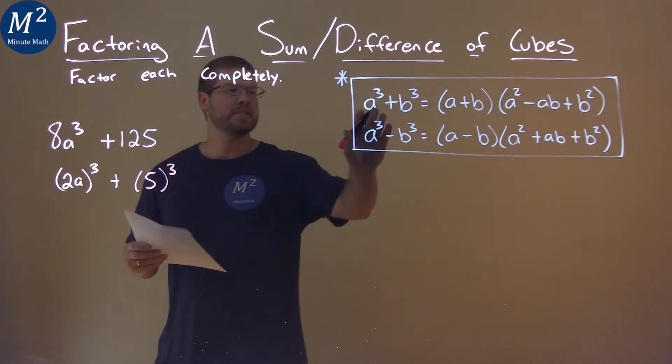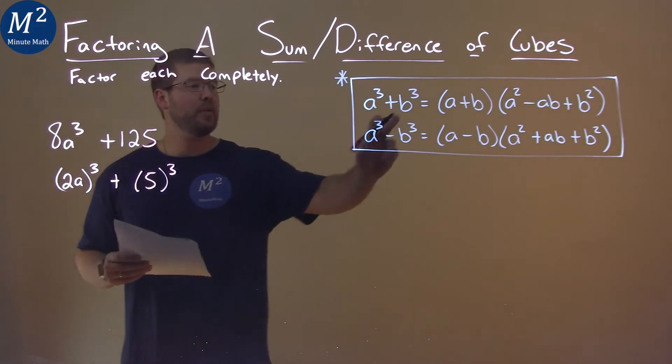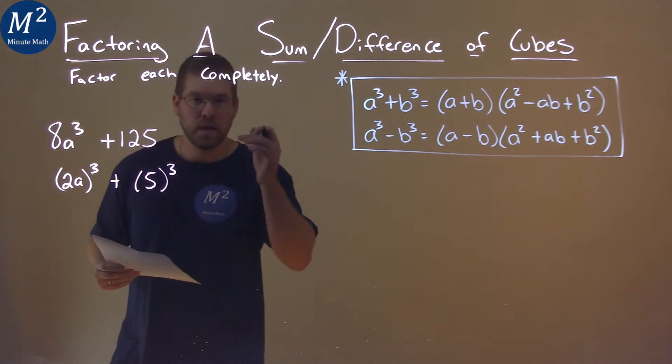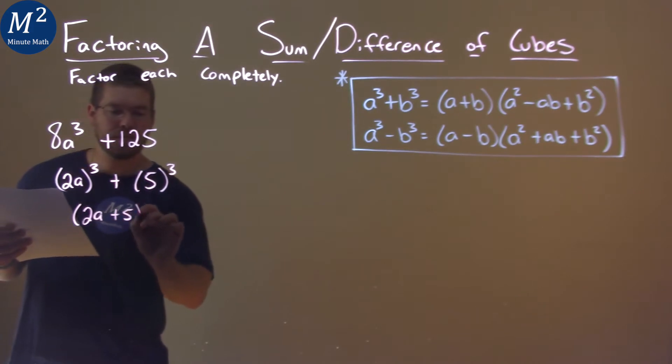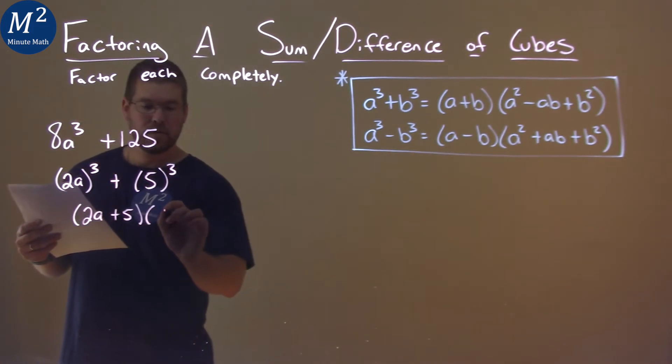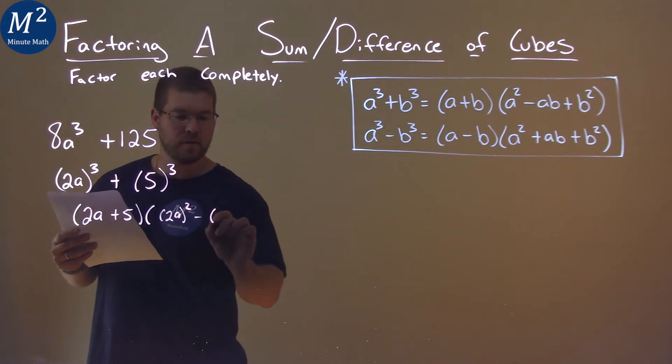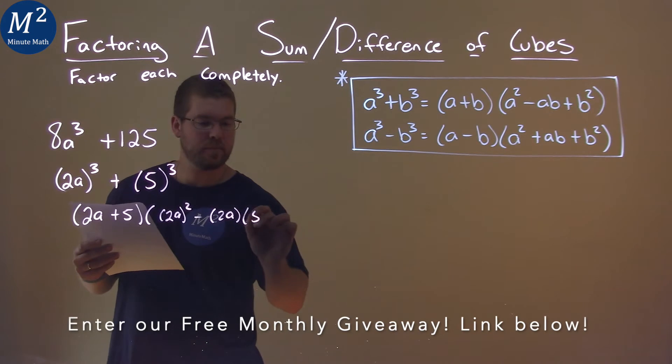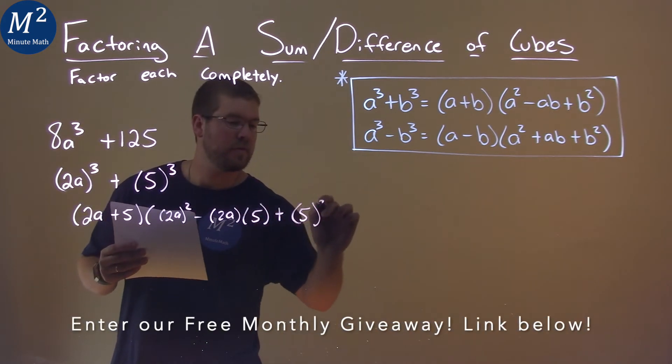And so now we can see our sum of cubes formula. Our a value is going to be 2a, and our b value is going to be 5. So, using the formula, 2a plus 5 times, well, 2a squared minus 2a times 5, being that b value, plus 5 squared.